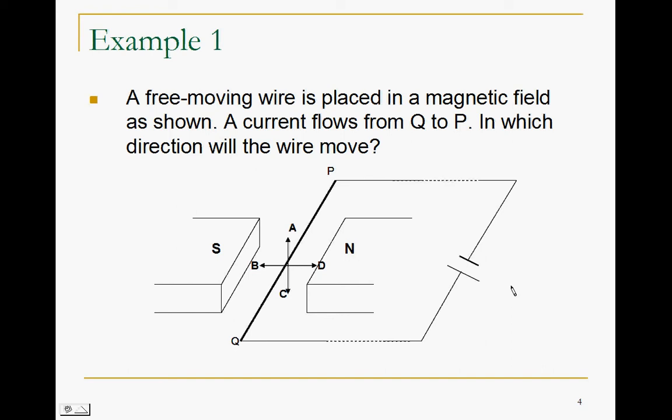How do we use Fleming's Left Hand Rule? Let's take a look at example 1. In this case, I have the conductor, let's say this PQ, this rod, placed in the region of magnetic field. The north is on the right, the south is to the left, so the direction of this magnetic field is going from right to left. And you look at this battery.